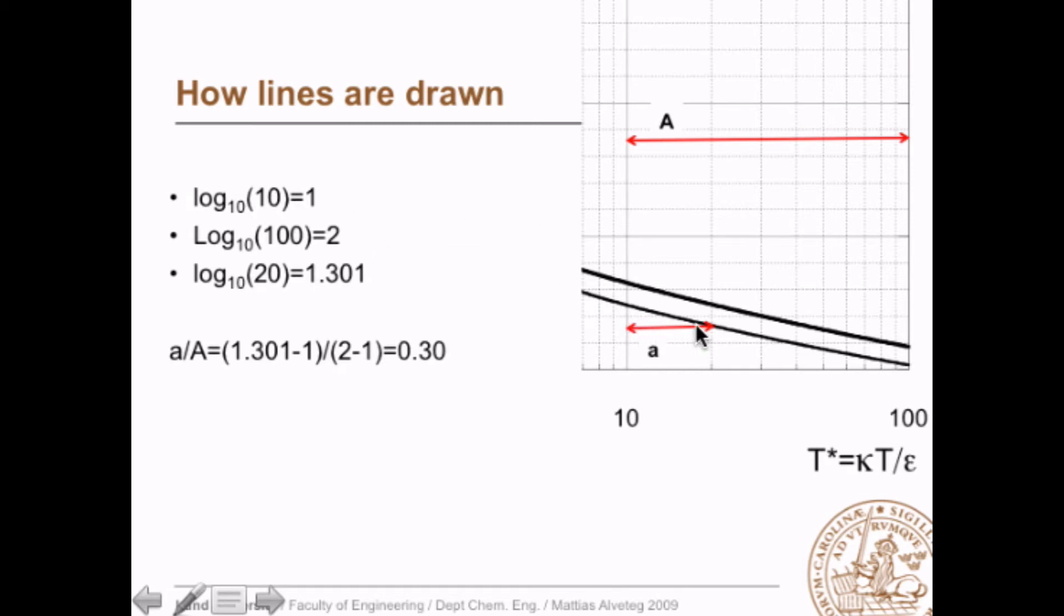So the small a here divided by the large a, the distance here, is simply the logarithm of 20 minus the logarithm of 10, divided by the logarithm of 100 minus the logarithm of 10. So 1.301 minus 1 divided by 2 minus 1, and that is 0.30.